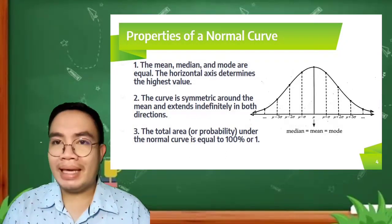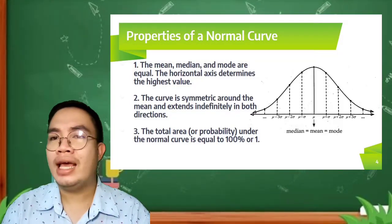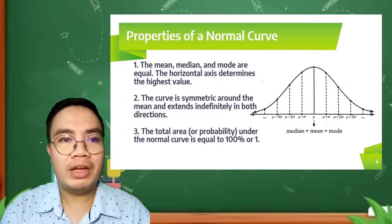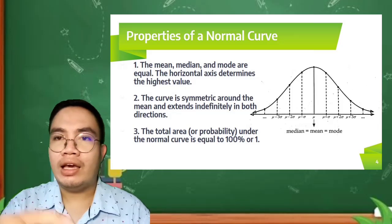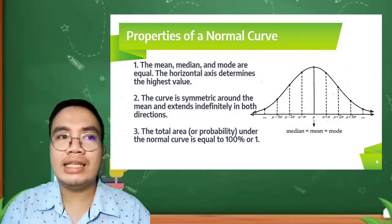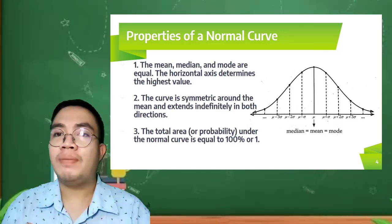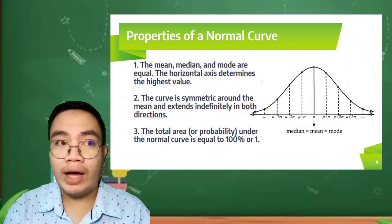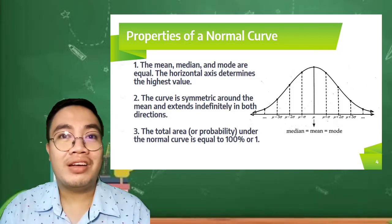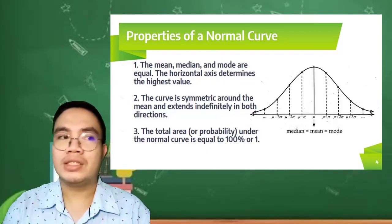Let us try to find out what are the properties of the normal curve. First, the mean, the median, and the mode are equal and the horizontal axis determines the highest value. If you take a look at our figure, it resembles a half bell and the horizontal axis in the middle is the highest value, which is the value of the mean, median, and mode. If these values are equal, that means our table resembles a normal curve.